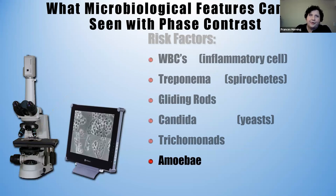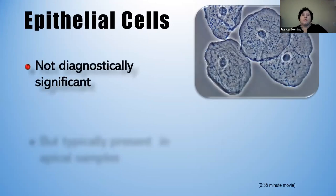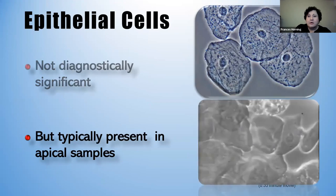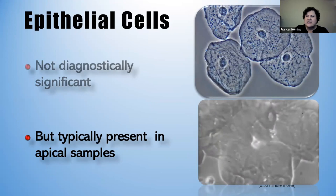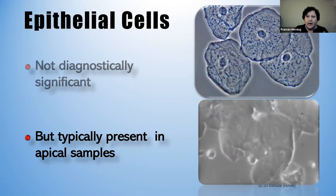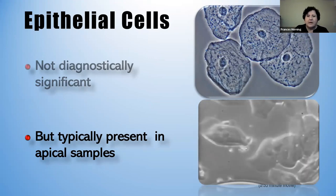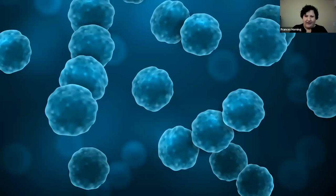You're also looking for spirochetes, gliding rods, candida — which is opportunistic — and trichomonads, which are parasites. Also look for amoeba, which has now been shown to be causative of periodontal disease. For many years they didn't know the role of amoeba in periodontal disease, but in April 2020 a study proved it is causative. You will not find amoeba on salivary testing — only on the microscope. Epithelial cells on the slide are normal and mean you got a good apical sample. They're skin cells sloughing all day long, and it shows you reached the bottom of the pocket.